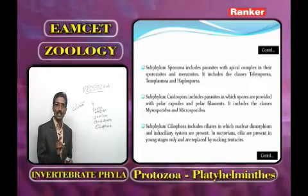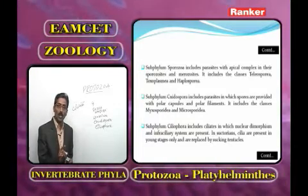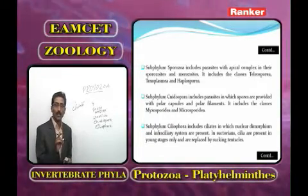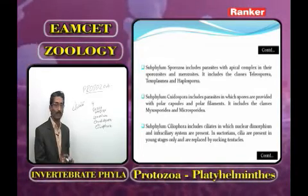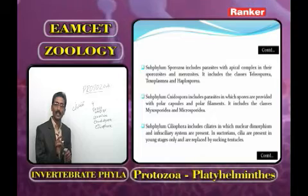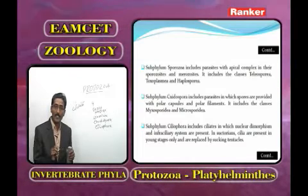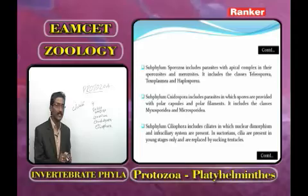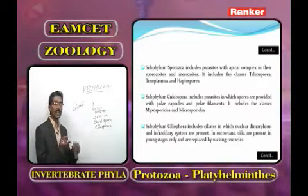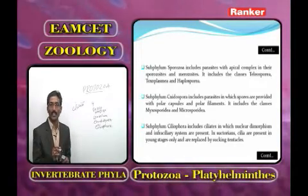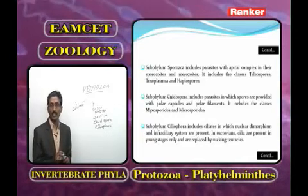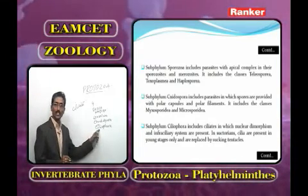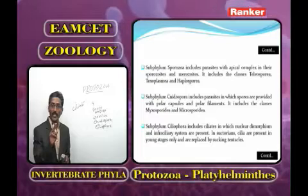The infraciliary system consists of a row of kinetosomes followed by kinetodesmata and kinetodesmal fibrils — all kineties unite to form the infraciliary system, present only in ciliates. In Opalinata, all nuclei are similar (homokaryotic), whereas in Ciliophora the nuclei are dissimilar.